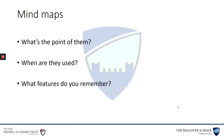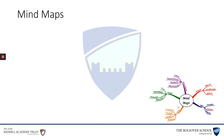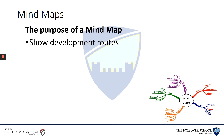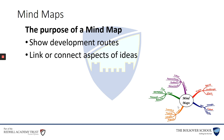So what we're going to look at today — or re-look at, I should say — is mind maps. What's the point of them? When are they used? And what features can you remember? Taking it step by step, in the bottom right hand corner you'll see an example of a mind map showing different things. The purpose of a mind map is to show different development routes you can take to actually complete a task. You can use links or connect aspects of ideas together, showing how different ideas might actually formulate into a real thing.